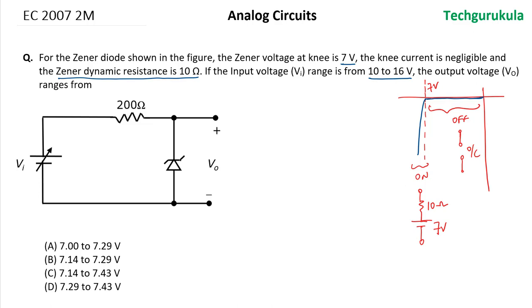This means the Zener diode is operated in the breakdown region. It will not be in the off region as it will be in the breakdown region for this entire range of 10 to 16 volts. So let's substitute this model that we have here in the circuit diagram.